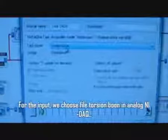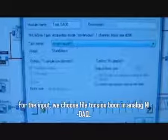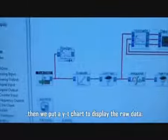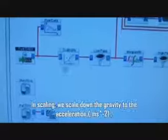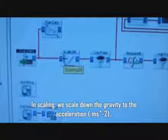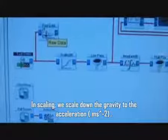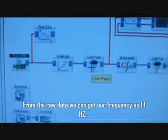For input we choose the torsion bone in analog NIDAQ. Then we put a YT chart to display the raw data. In scaling we scale down our gravity to acceleration. From the raw data we can get our frequency as 1.1 Hz.